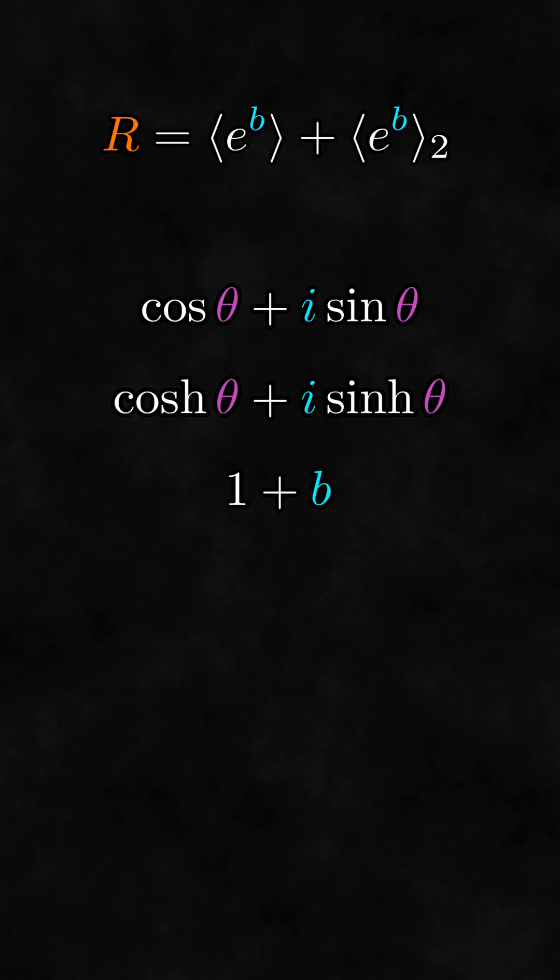We can talk about these cases all at once by defining a generalized cosine and a generalized sine as the scalar and bivector parts of the rotor respectively.